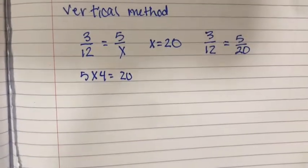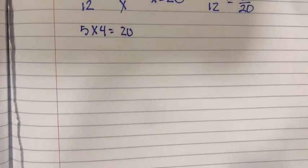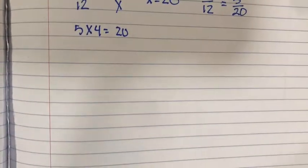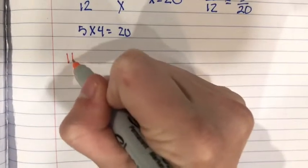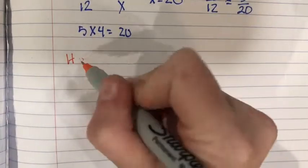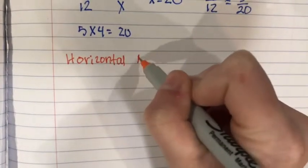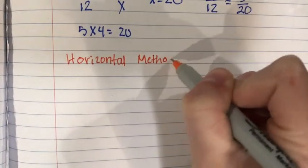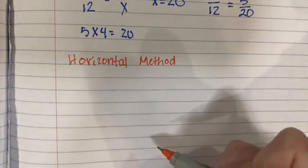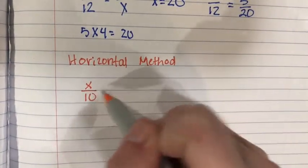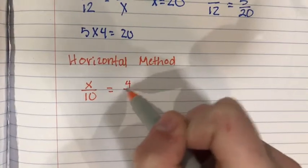Now the second method that we are going to be doing is called the horizontal method. The example that we are going to do for this is x over 10 equals 4 over 5.